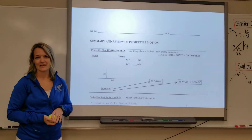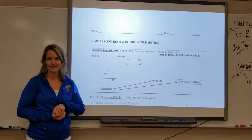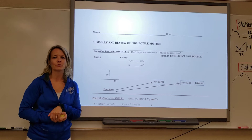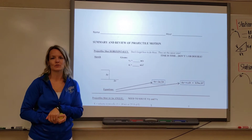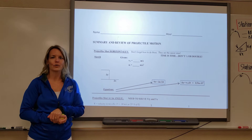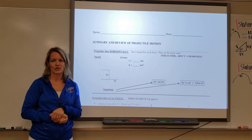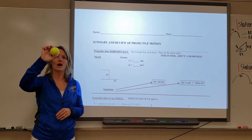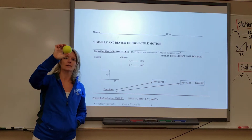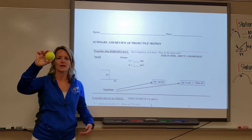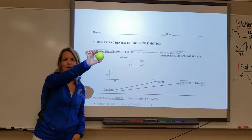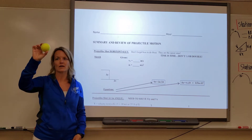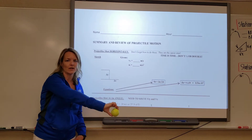Hi there, welcome back to physics. It is week eight of quarter one, and this week we are going to spend time reviewing the difference between the two types of projectiles. Two weeks ago we talked about horizontal projectiles. Horizontal projectiles are the type that start up, have a push or a pull, they have a velocity in the horizontal direction, and then because gravity causes them to fall, they also move in the y direction.